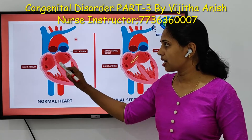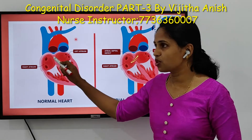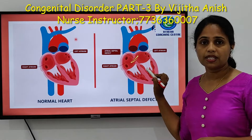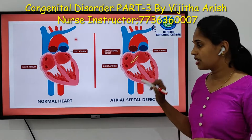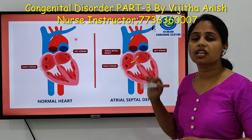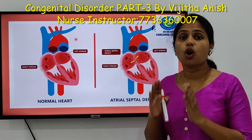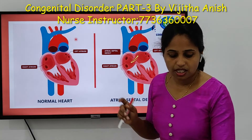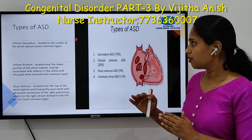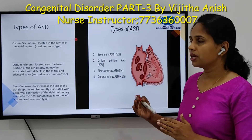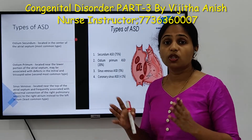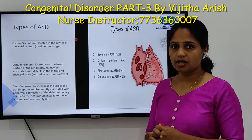In a normal heart, between the two atria there is no opening. Compare this picture — this is ASD. In between the two atria there is an opening. So as a result of this opening, certain things happen. Let us look at the types of ASD.